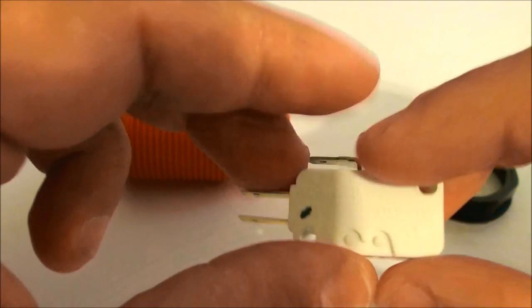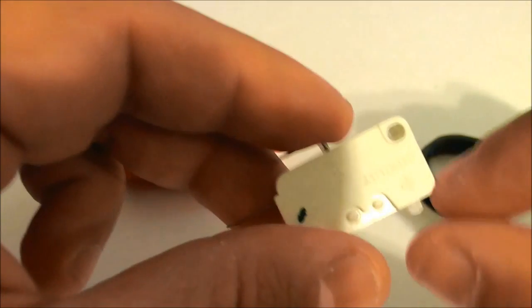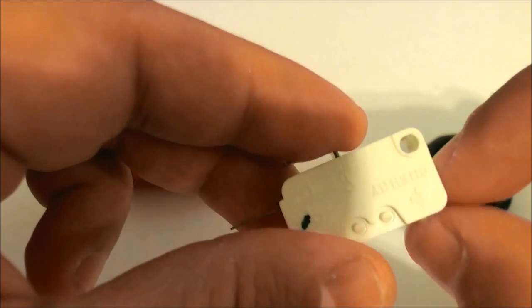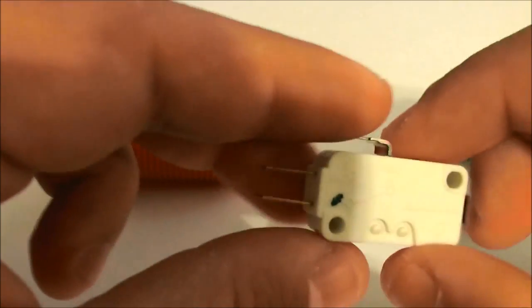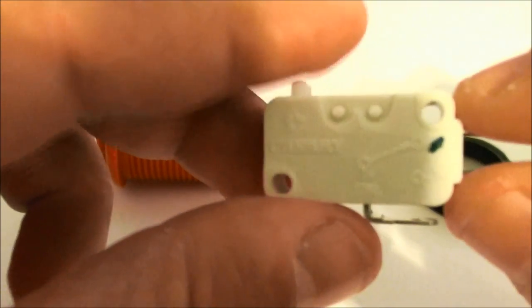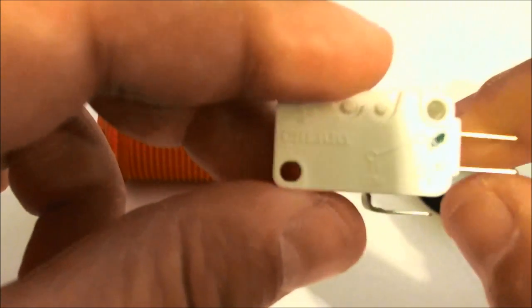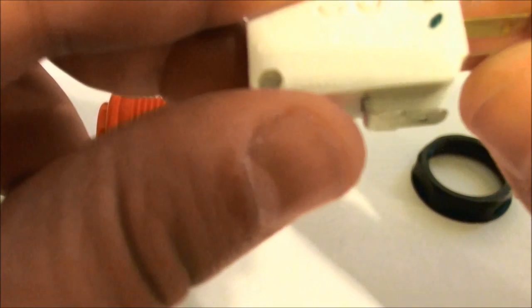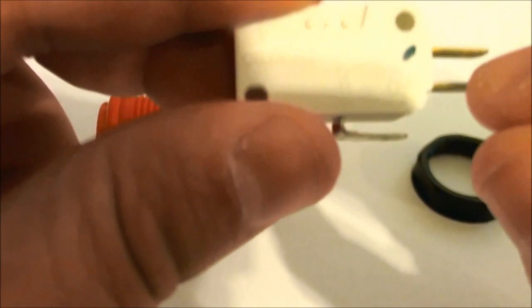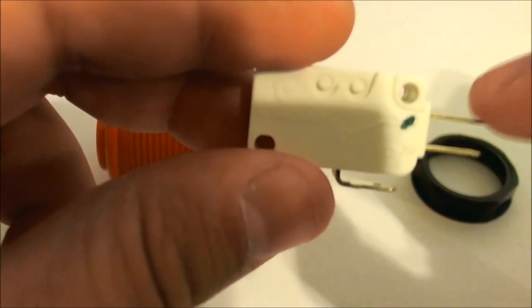And how this works is this little part right here, that's the switch. So they are labeled. This would be the common, this right here would be the common if you're familiar with electrical. This would be the normally open and the normally closed contact.